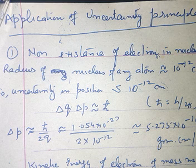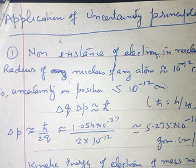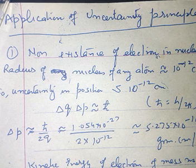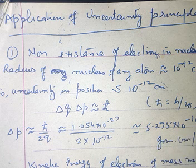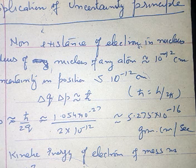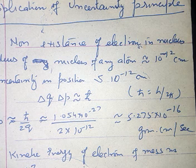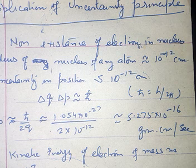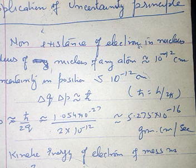The value of h-cross is 1.054 into 10 raised to the power minus 27, and delta q, which is 2r, is equal to twice into 10 raised to the power minus 12. Solving this equation, we get the value as 5.275 into 10 raised to the power minus 16 gram centimetre per second. If this is the uncertainty in momentum of the electron, the momentum of the electron must be at least comparable with this magnitude, so p is approximately equal to 5.275 into 10 raised to the power minus 16 gram centimetre per second.